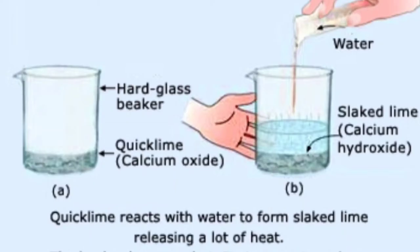The next characteristic is change in temperature. In some reactions, when we carry out a chemical reaction, the temperature will change — either it will go down or it will rise. For example, when we add water to quicklime, which is calcium oxide, the temperature will rise and it becomes slaked lime, or calcium hydroxide.